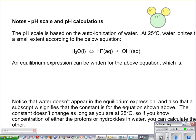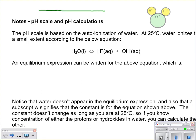pH calculations are a way of determining how acidic or basic a solution is. We can start by thinking about the pH scale. Considering 0 at one end, 7 in the middle, and 14 at the other end, a low pH is going to be more acidic and a high pH is going to be more basic.